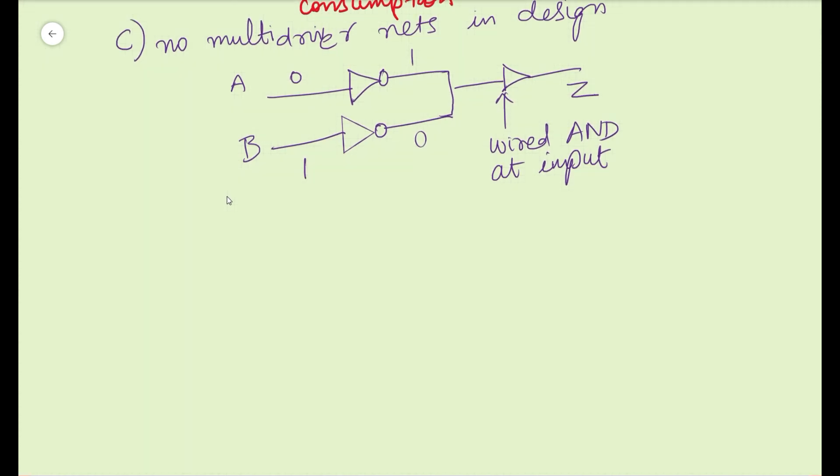Let's take one more example to understand multi-driven nets again. Say you have a NAND gate and one more NAND gate giving common B input. B input is going to both NAND gates, and the second NAND gate is effectively a NOT gate. Both are driving a common NOT gate. A and B outputs are going to a wired AND.